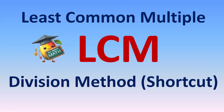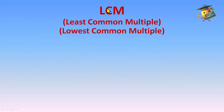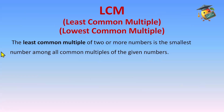Hi everyone, today we'll learn how to find LCM using the division method. It's a shortcut method with which we can find the LCM, and it is the easiest method. LCM stands for Least Common Multiple, or Lowest Common Multiple. From the name, the definition is clear: the least common multiple of two or more numbers is the smallest number among all the common multiples of the given numbers.